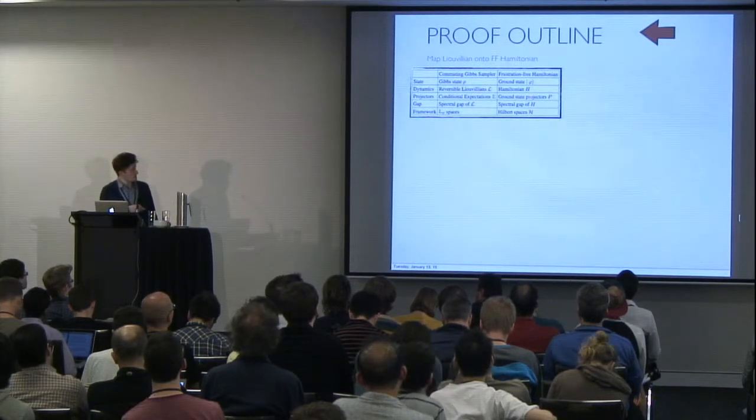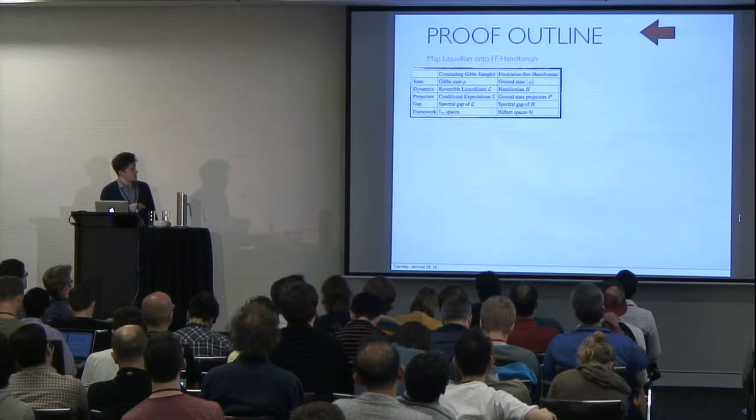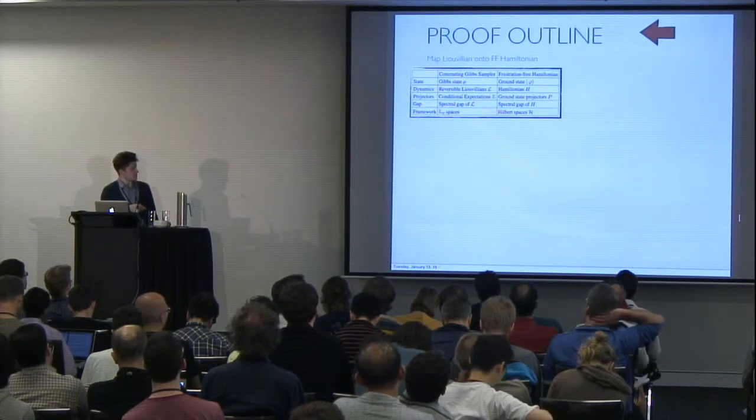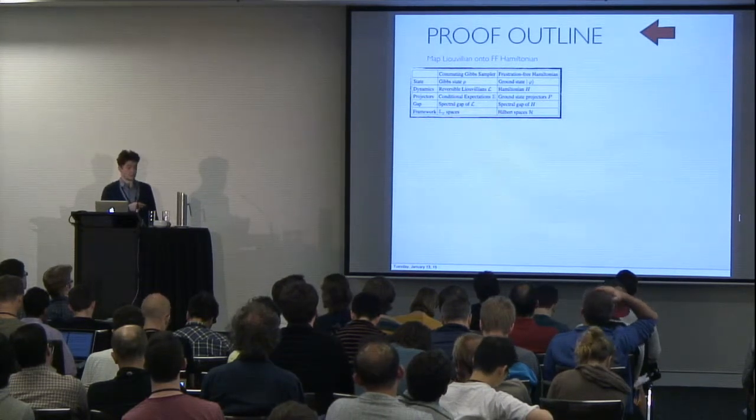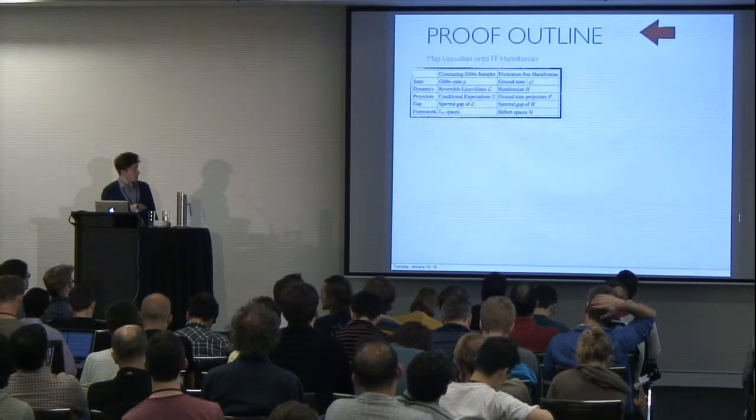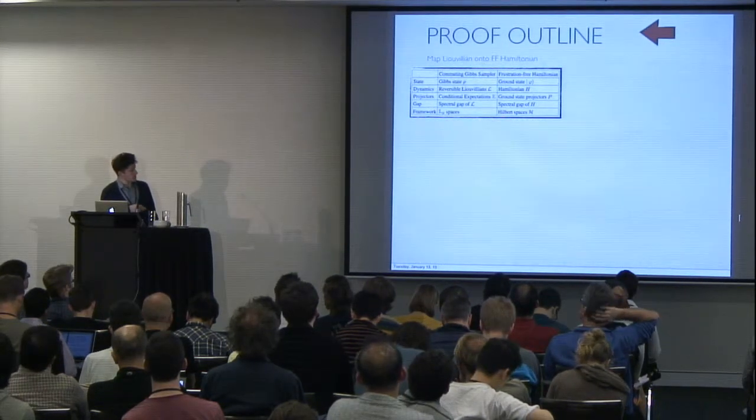In this representation, your conditional expectation becomes a ground state projector. The gap of your Gibbs sampler becomes the gap of some frustration-free Hamiltonians.